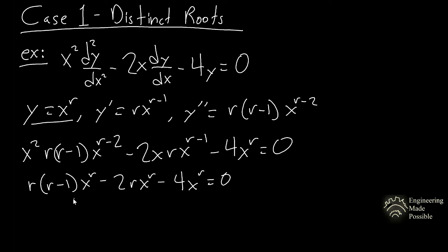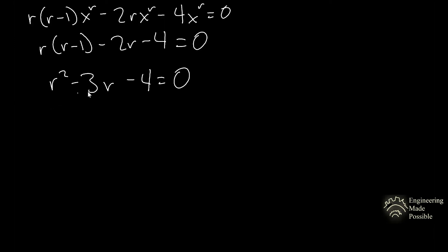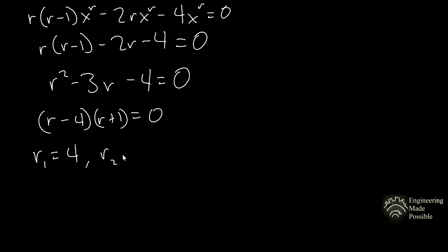Just as with the characteristic equation for constant coefficients where we dropped the y terms, here we drop the x to the r factor. The characteristic equation becomes r(r minus 1) minus 2r minus 4 equals zero. Distributing and simplifying gives r squared minus 3r minus 4 equals zero, which factors as (r minus 4)(r plus 1) equals zero.